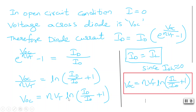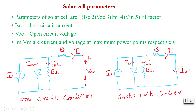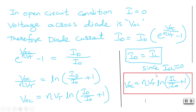Once we get Voc: in this case Id equals Il, since Rsh is very large, so only a very small current flows through it which we approximate as zero, and the output terminal is open. So Id equals Il, and substituting Il in place of Id, the open circuit voltage becomes: Voc = η·Vt · ln(Il / I0 + 1).